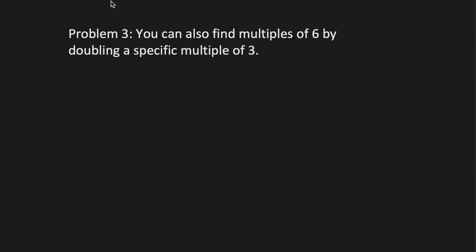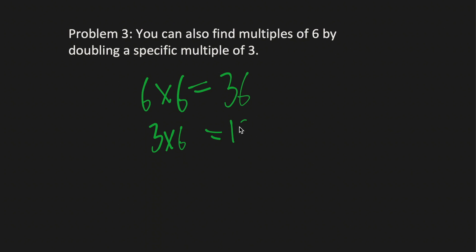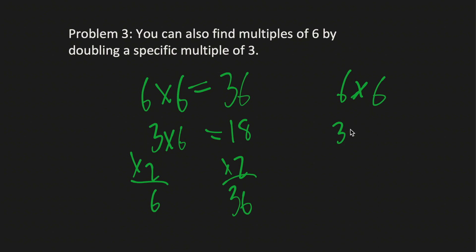Moving on to Problem 3. You can also find multiples of 6 by doubling a specific multiple of 3. For example, take 6 times 6, which equals 36. If I take 3 times 6, which is 18, and double that, I get 36. It sounds complicated but it's really simple — it's just the same multiple. You can't use 6 times 6 and 3 times 20, because doubling 60 gives 120, which is definitely not equal to 36. So it needs to be the same multiplier.